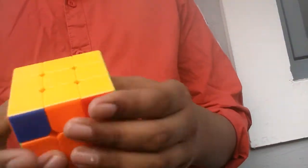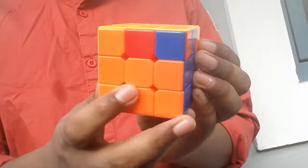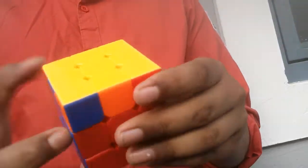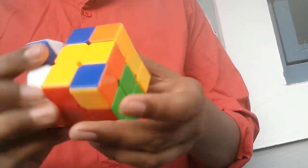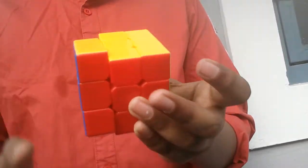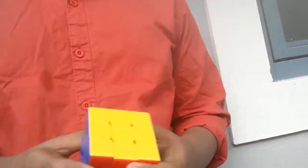Now we go to the bottom, and it's an F-Perm, so F-Perm algorithm. As you can see, I do the F-Perm algorithm, the cube solves. So that's the PLL method.